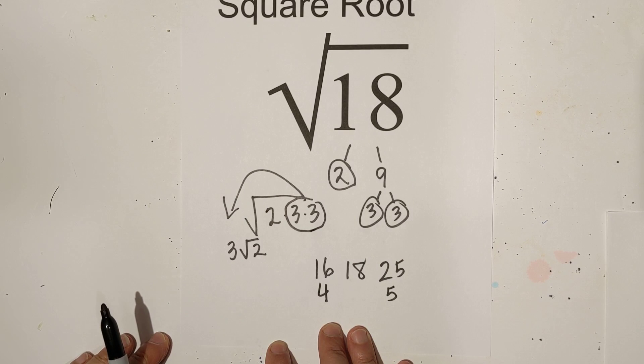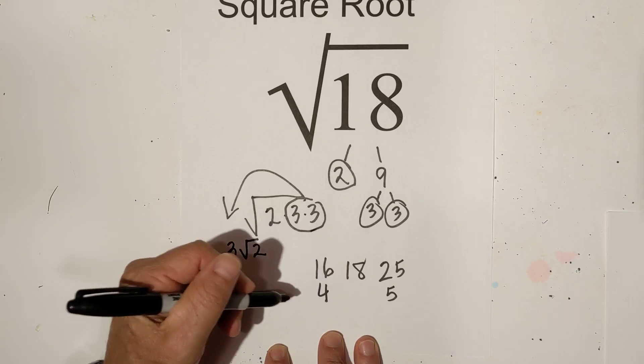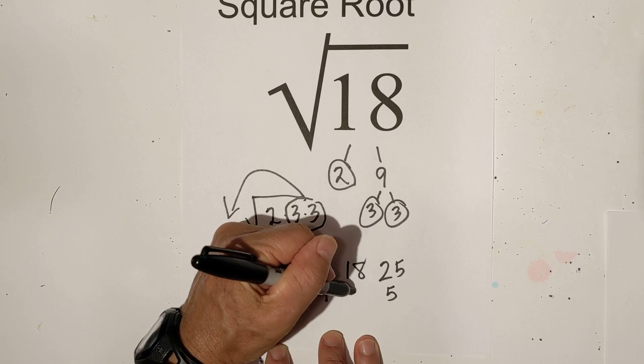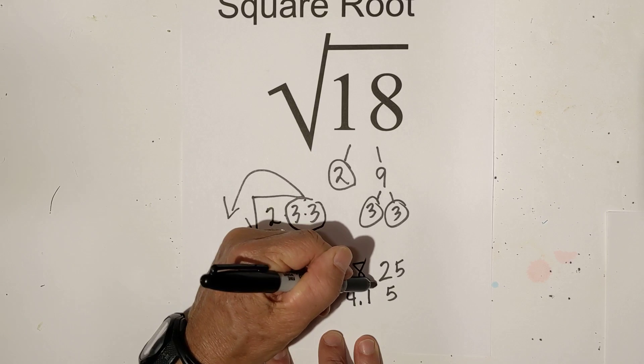It's a little closer to 16 than 25, so I could estimate it would be roughly 4.1.